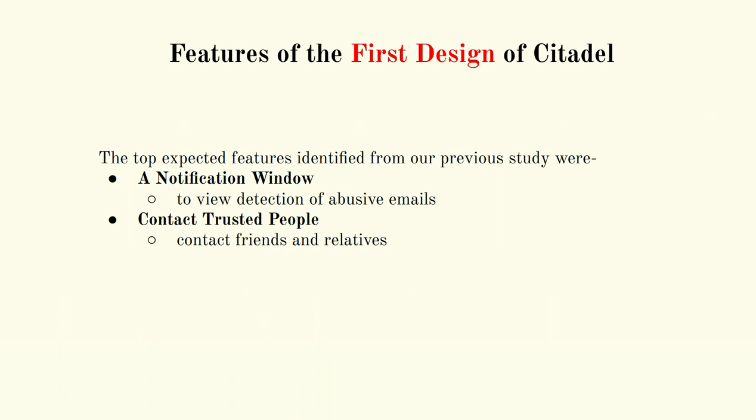From our previous study, I identified two top expected features. The first is a notification window, which helps to view the detection of abusive emails. The second feature we found is contacting trusted people, where users can contact friends and relatives if they feel insecure while coming across abusive behavior.